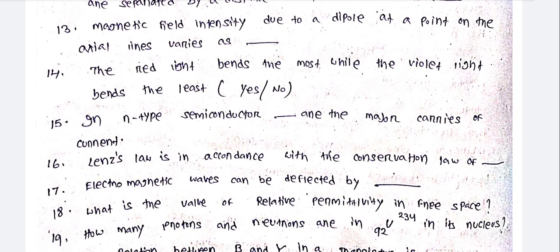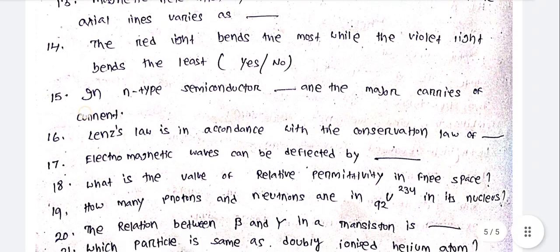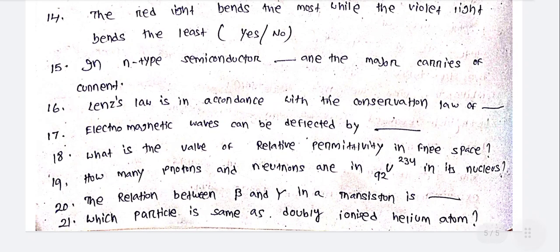Magnetic field intensity due to a dipole at a point on the axial lines varies as dash. The red light bends the most while the violet light bends the least — yes or no? In N-type semiconductor, dash are the major carriers of current. Lenz's law is in accordance with the conservation law of dash. Electromagnetic waves can be deflected by dash.